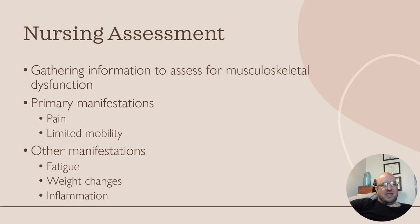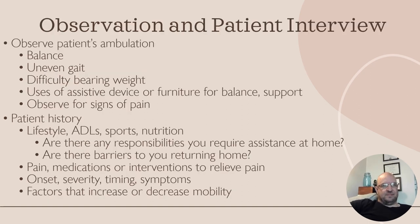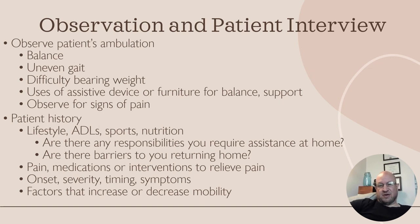For nursing assessment, we can gather information to assess musculoskeletal dysfunction including pain, limited mobility, fatigue, weight changes, and inflammation through observation and patient interview. We want to observe the patient's ambulation including gait, whether it's uneven, balance, and difficulty bearing weight. Signs of pain and patient history are always important no matter what system we're working on.